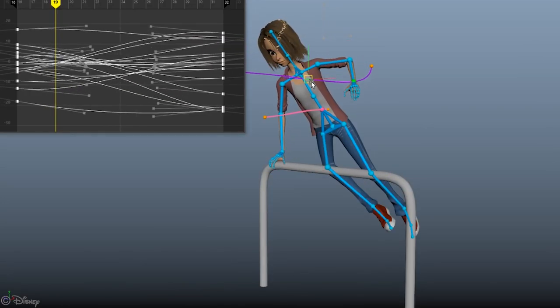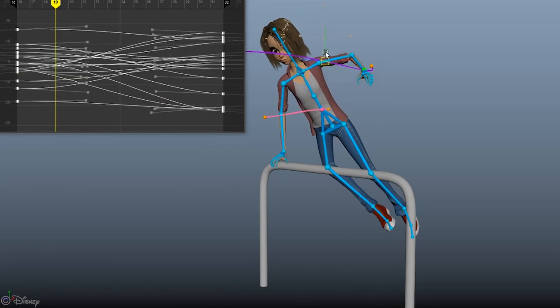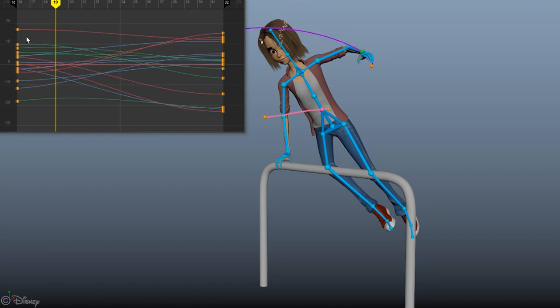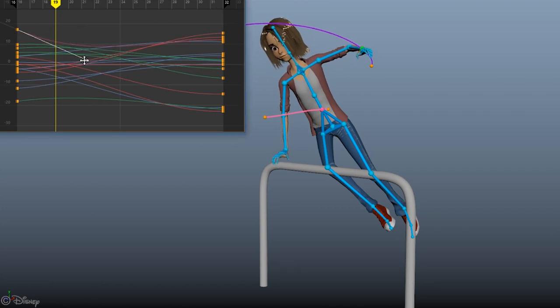During manipulations, our solver optimizes for the tangents of animated attributes. No keys are added, which permits the user to keep using traditional tools if desired.